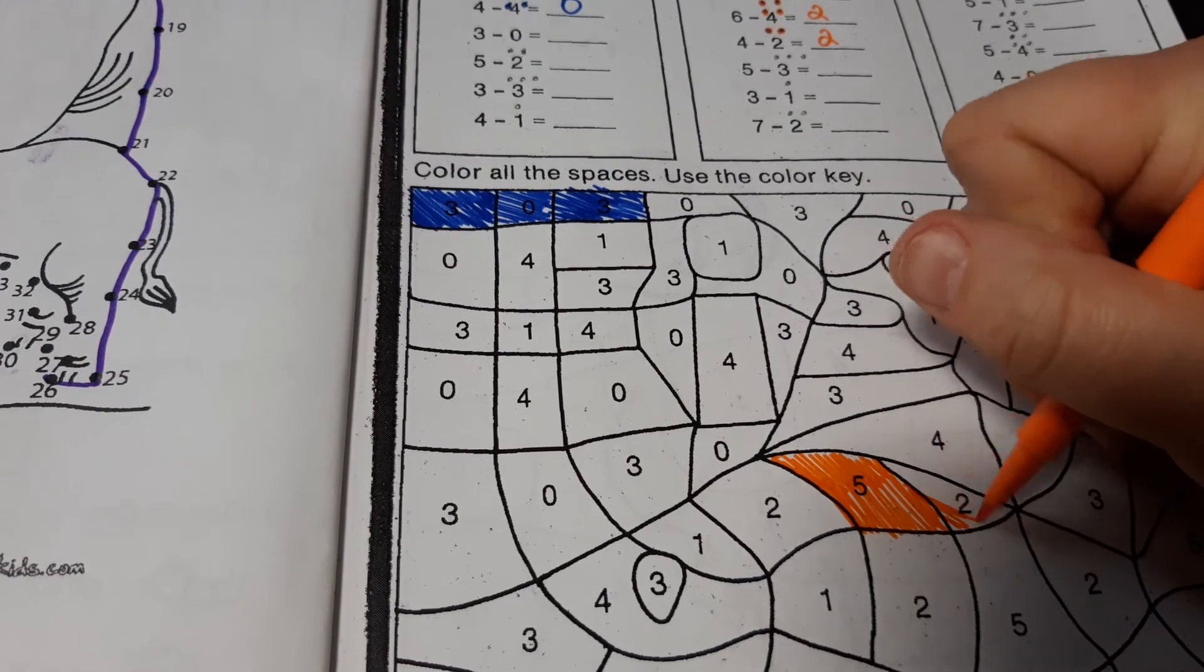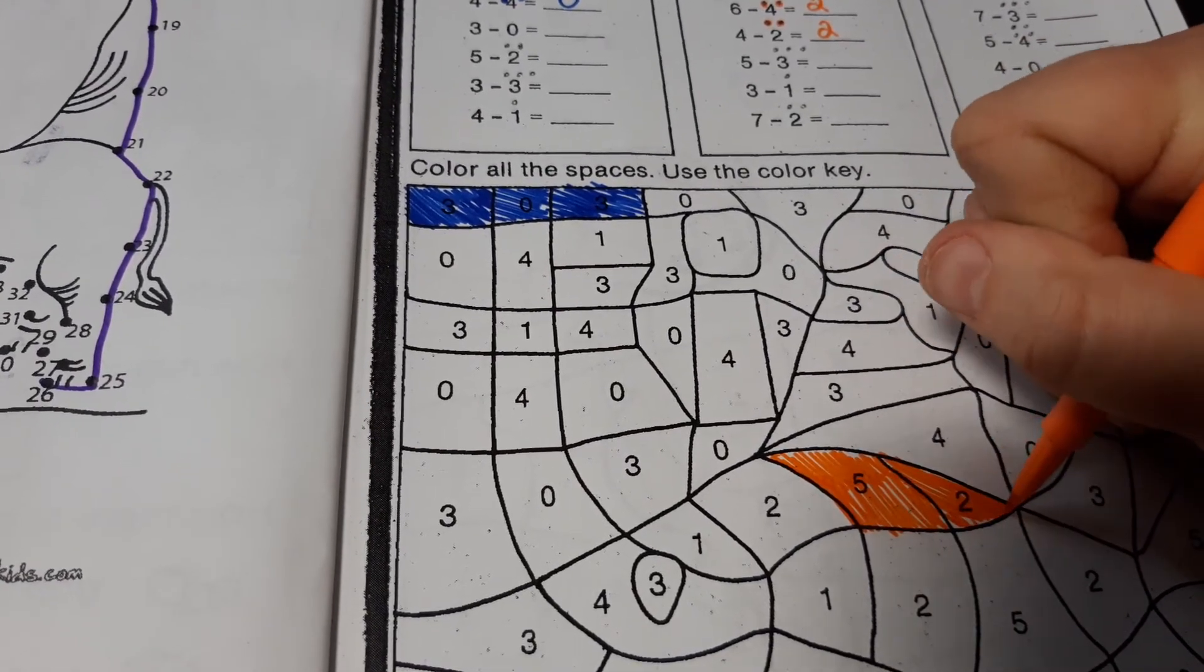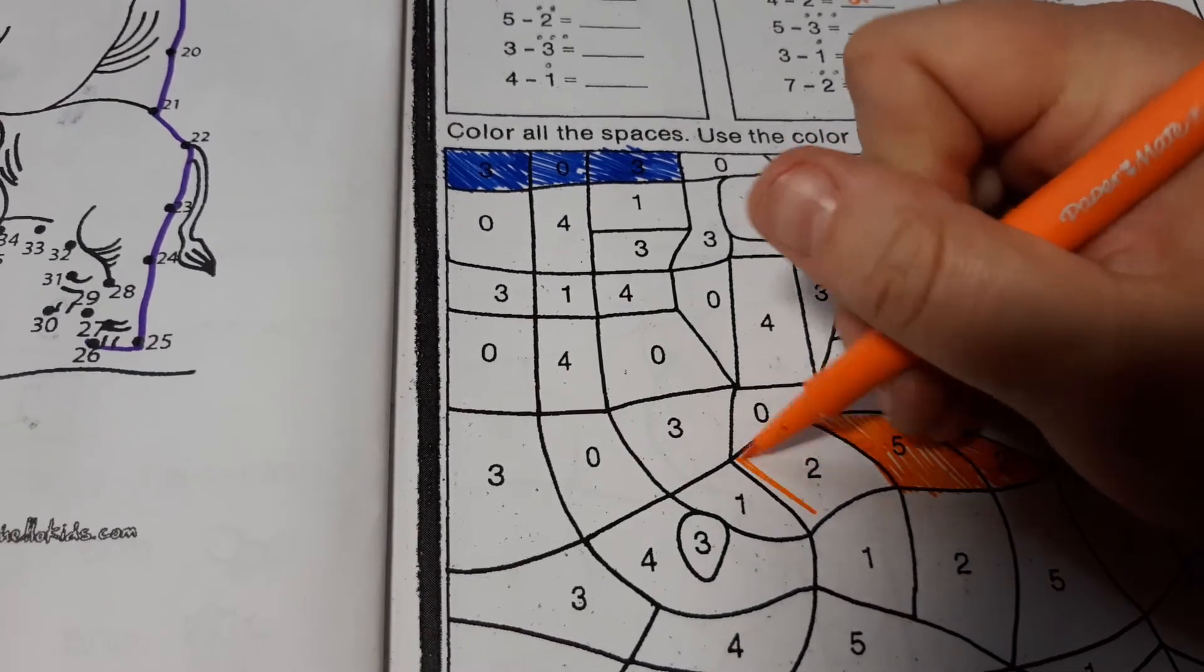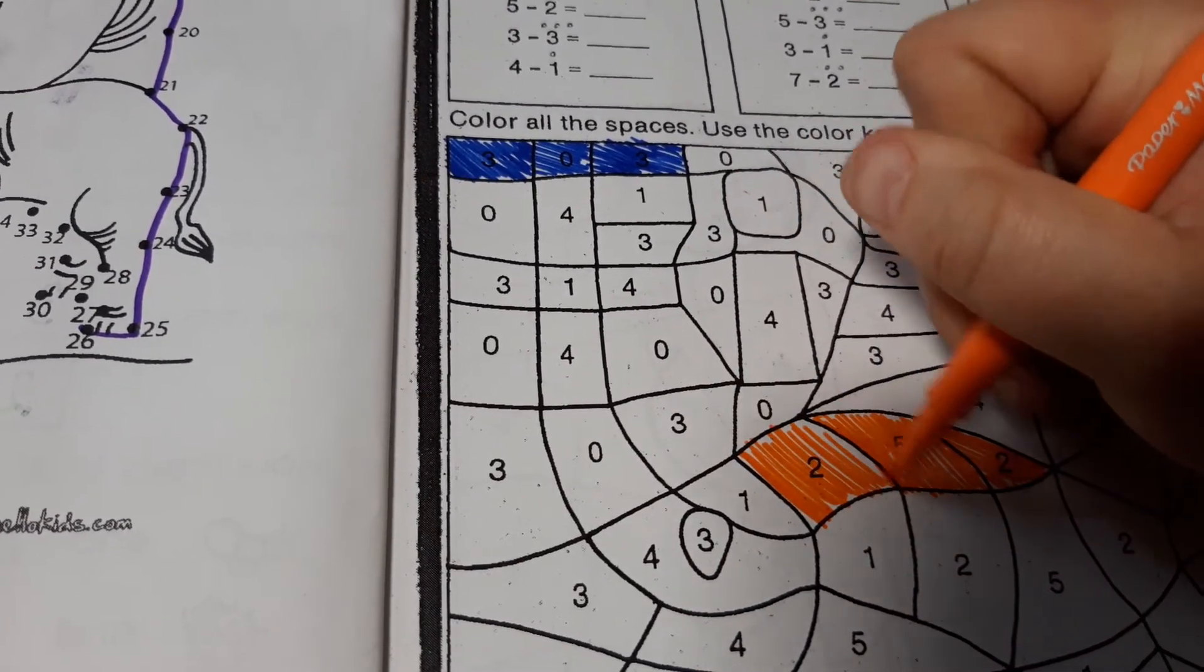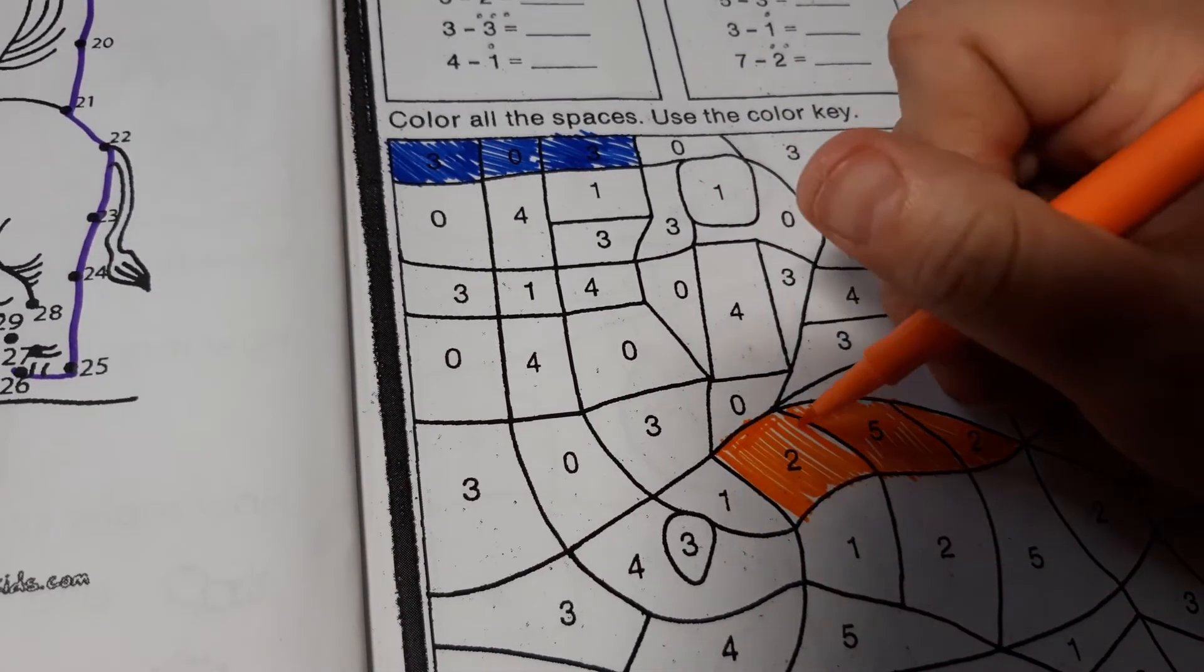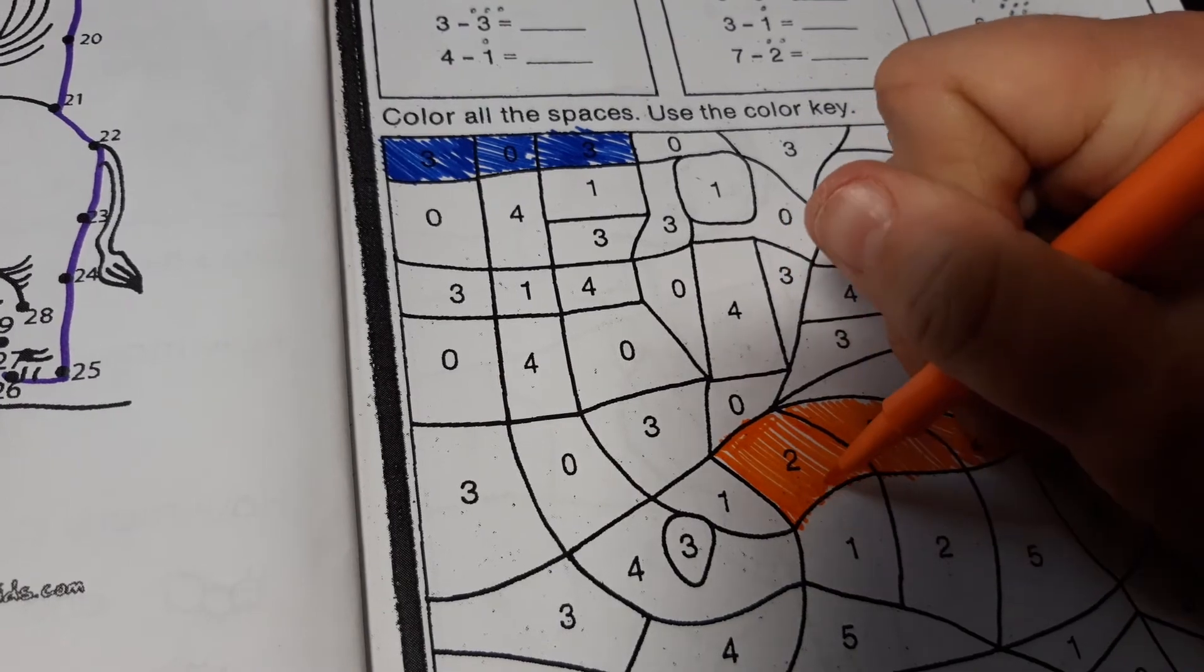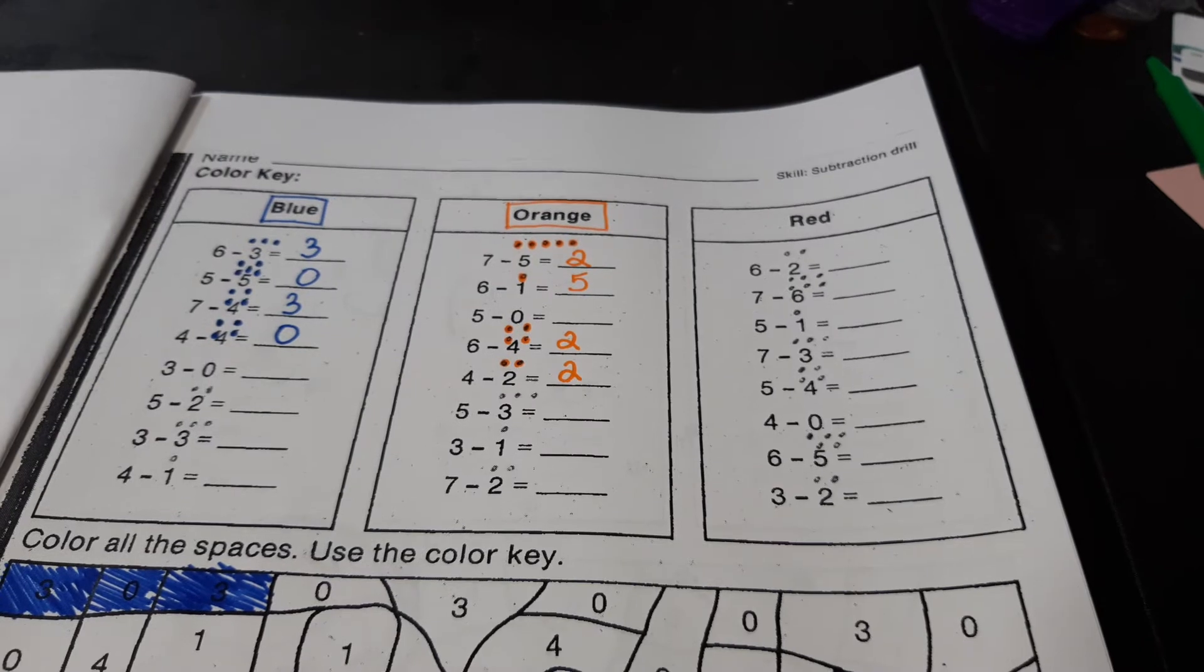I also have some 2s. So, I'm going to color the 2s orange. Okay. And you're going to keep coloring all the 2s and the 5s orange. Okay. I'll let you color the rest on your own.